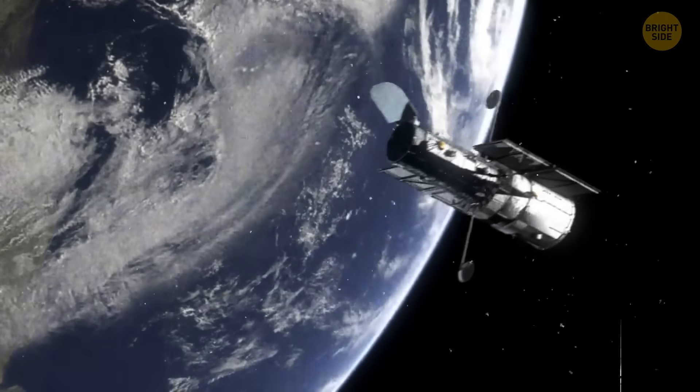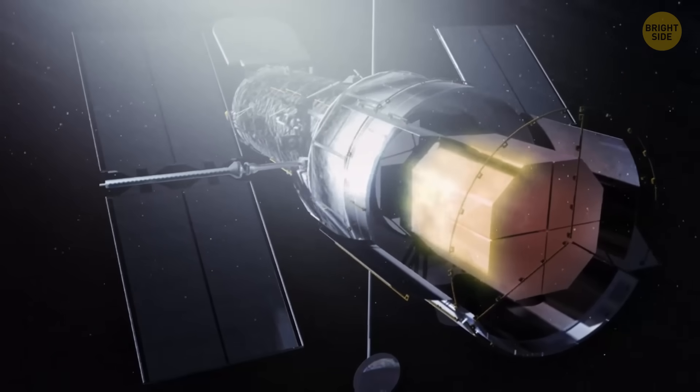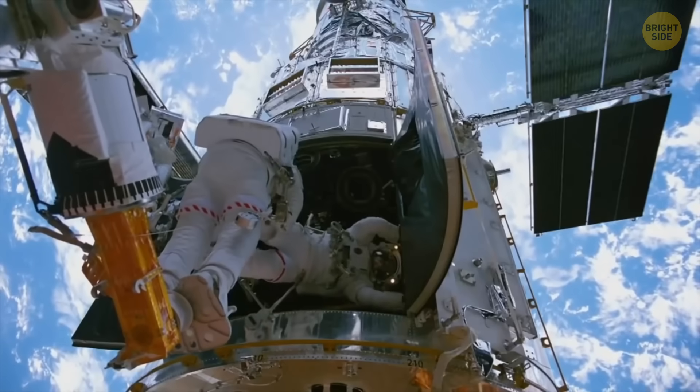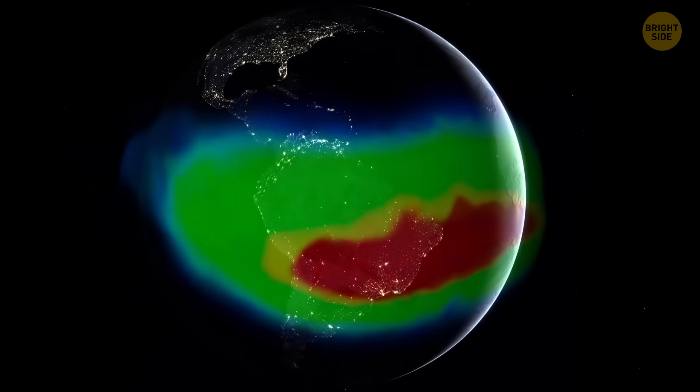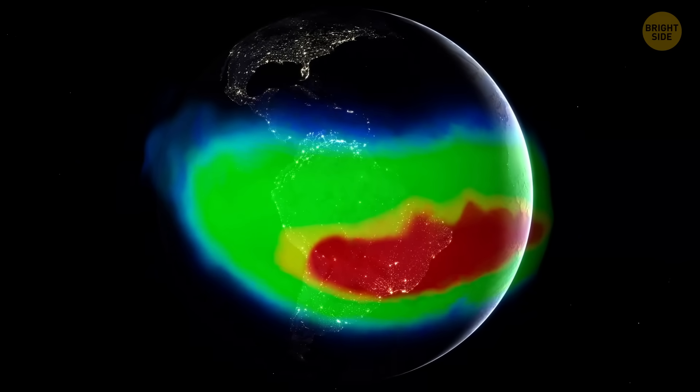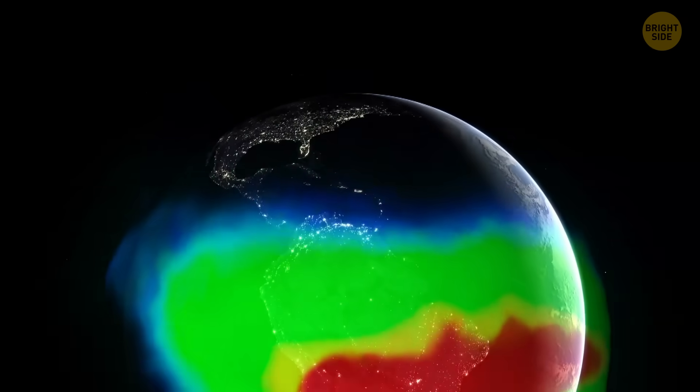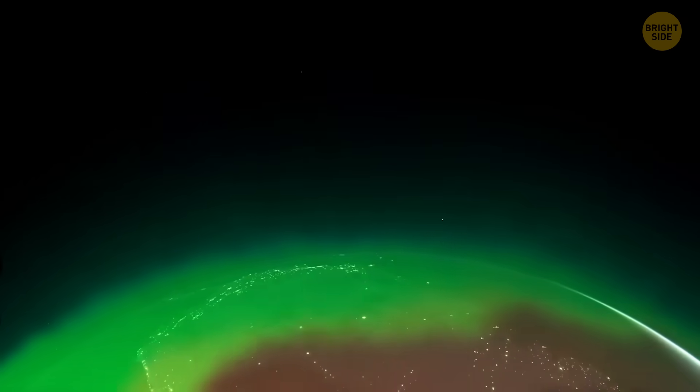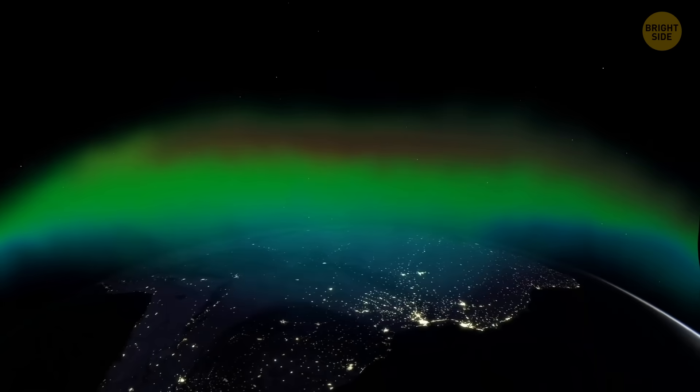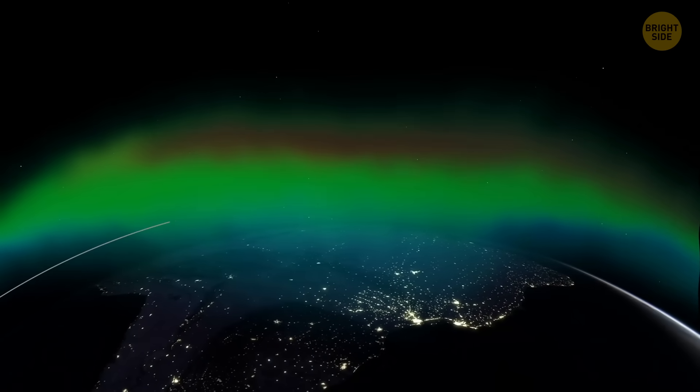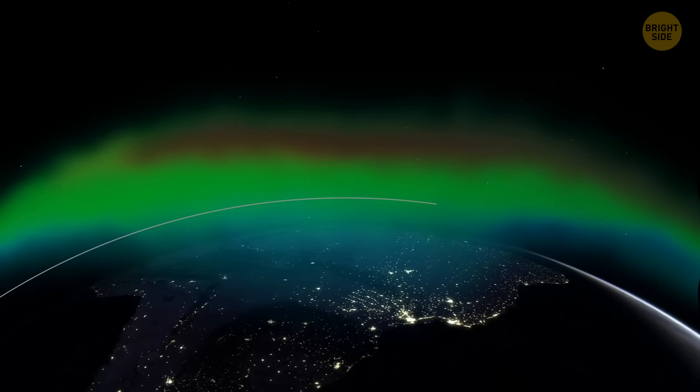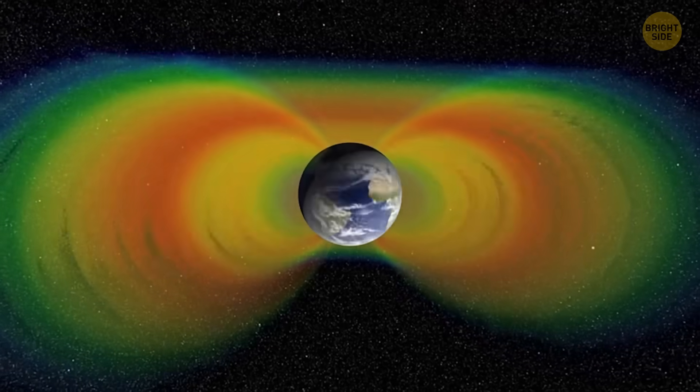A huge invisible danger zone is hanging above Earth, messing with satellites, zapping electronics, and giving astronauts a headache. Scientists call it the South Atlantic Anomaly, and it's kind of like the Bermuda Triangle of space, because weird stuff happens there, and nobody fully understands why. Want to know more about this thing?